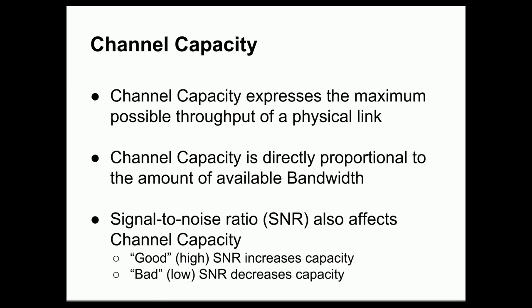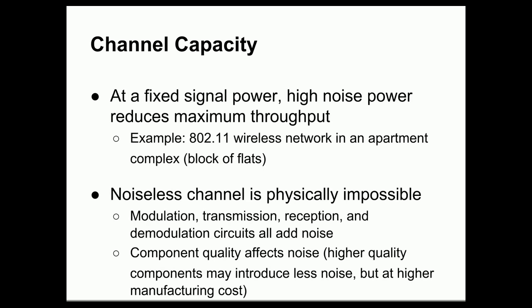So that channel capacity expresses the maximum possible throughput of a physical link, and it's directly proportional to the amount of available bandwidth. It's also related to the signal-to-noise ratio. A good or high signal-to-noise ratio does increase the capacity of the channel, while a bad or low signal-to-noise ratio decreases the capacity of the channel. And at a fixed signal power, high noise power is going to reduce the maximum throughput available to the channel. Try using an 802.11 wireless network, for example, in an apartment complex or block of flats in British English. And you'll see that you'll never quite get the speeds that is advertised by the particular wireless networking standard. And the reason for that is that there's so much noise from everyone else's wireless devices that it reduces the maximum throughput that your wireless devices can achieve because the channel is simply too noisy.